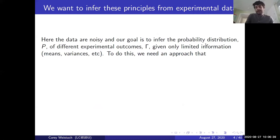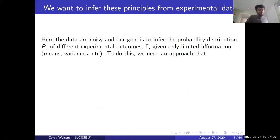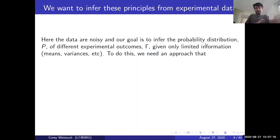More generically, imagine you have some kind of experimental system where you're taking noisy measurements. You run an experiment a bunch of different times and get different outcomes. What we really want is to predict what is going to happen if we run this experiment in the future. We've got some experimental design with a bunch of different outcomes—call those gamma—and some probability distribution P that determines how likely each one is to occur. In general, we're given limited information: maybe means of something we care about, variances, correlations, and higher-order moments. But we don't really have P and we need to figure out what it is.